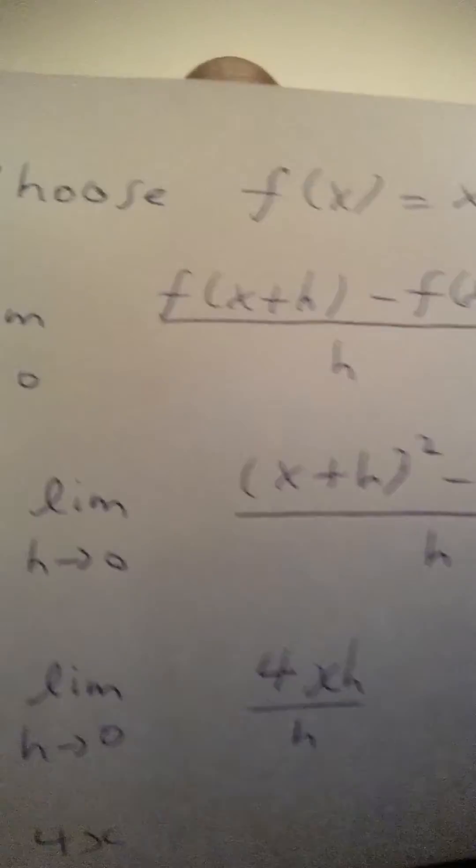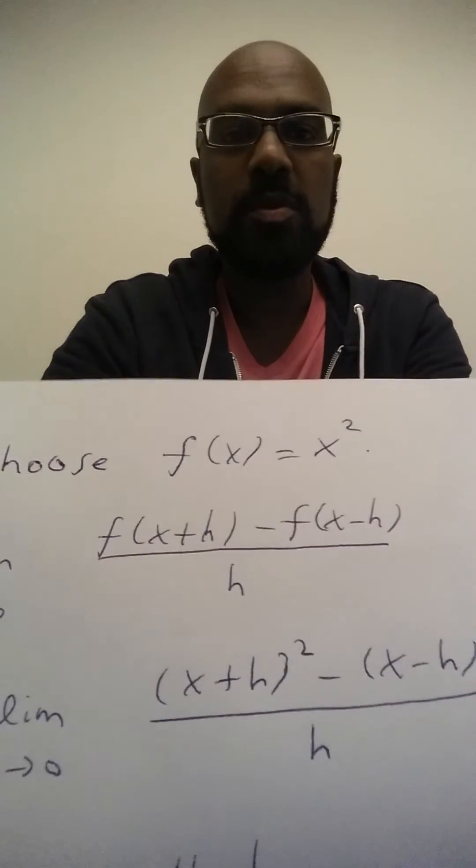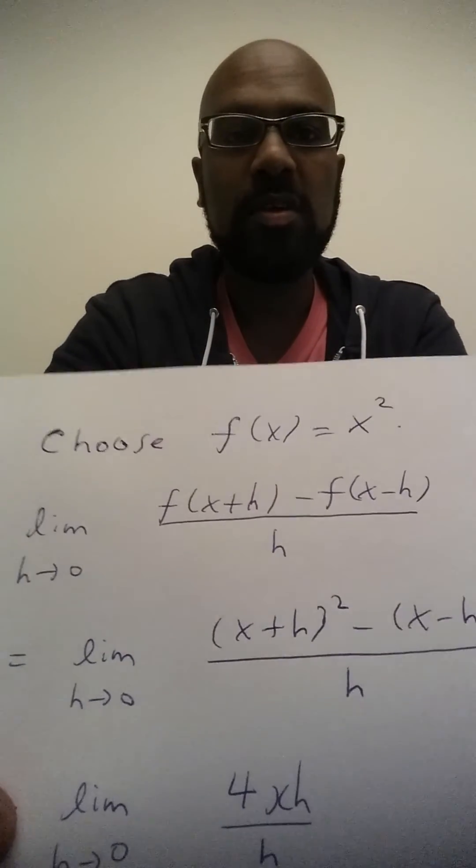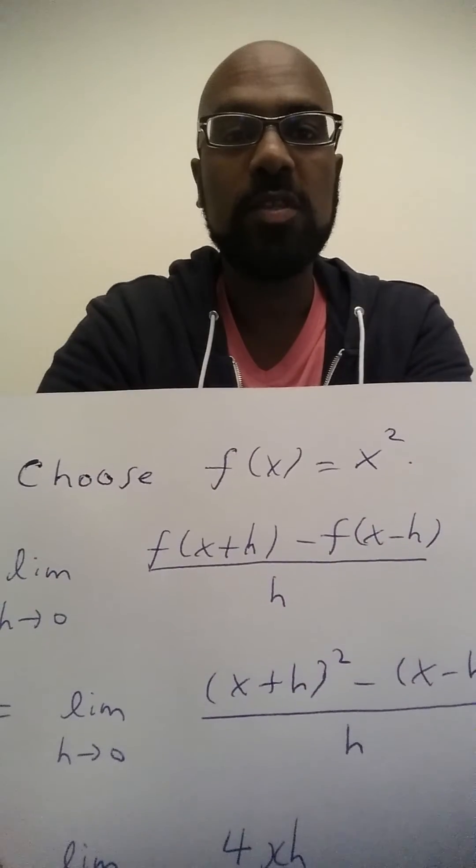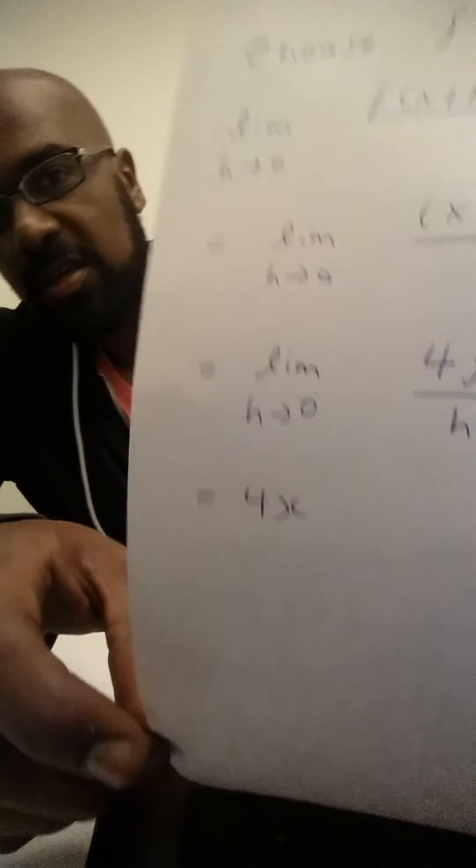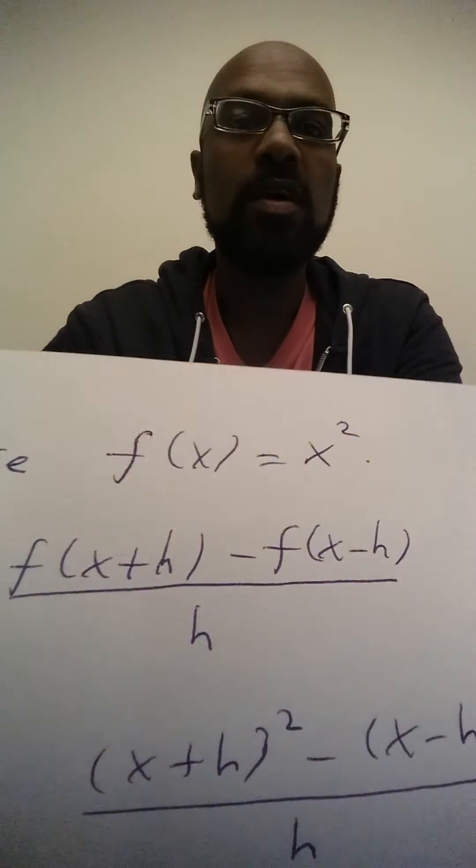So we see from quick algebraic manipulation that the limit that we're interested in computing for this function turns out to be 4x. And that's precisely twice the derivative of the function f of x being x squared.